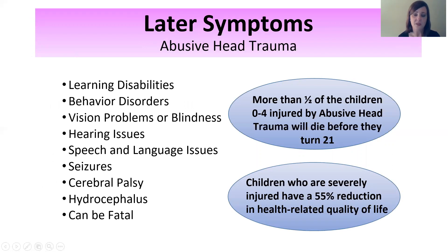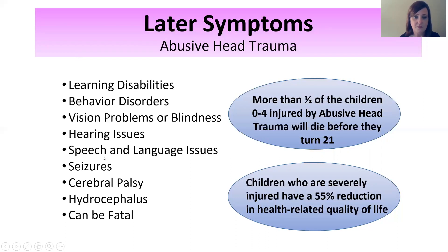Regarding later symptoms of abusive head trauma: more than half of children injured before age four will die before they turn 21. Children who are severely injured have a 55% reduction in health-related quality of life. Abusive head trauma is very serious and can cause extensive, life-threatening injuries. Down the road, a child who has had abusive head trauma may have learning disabilities, vision problems or blindness, changes in speech and language abilities, seizures, cerebral palsy, or hydrocephalus — water on the brain — which is when there is too much cerebrospinal fluid inside the skull, leading to swelling. As we discussed, swelling in the brain is always dangerous. Abusive head trauma is serious, scary, and can be fatal.